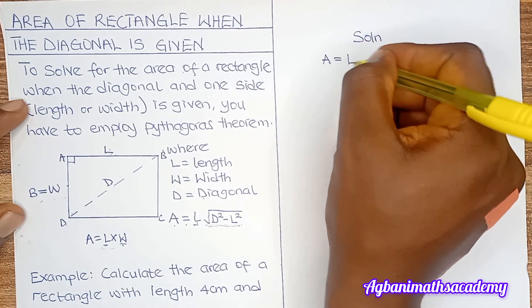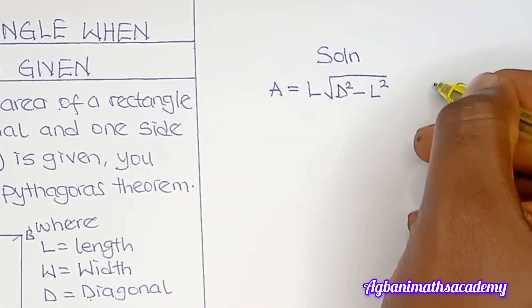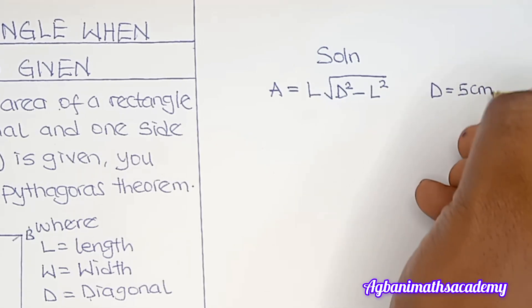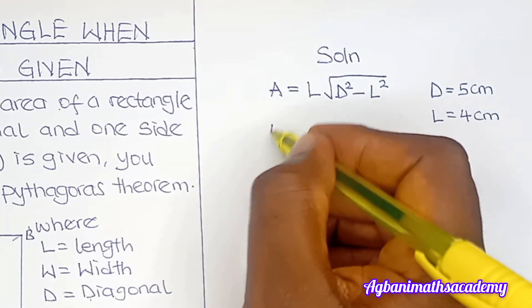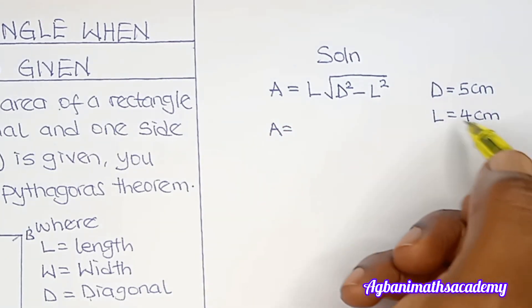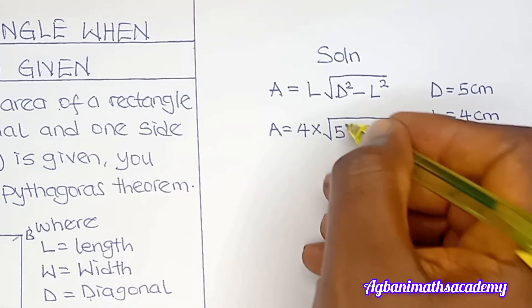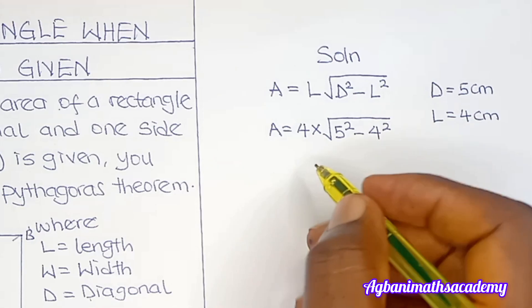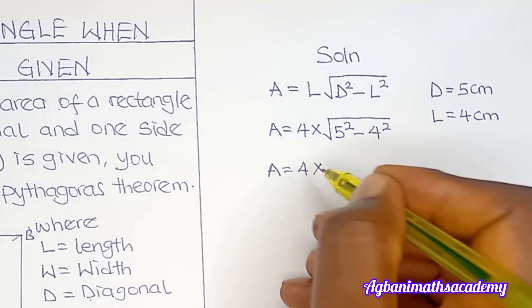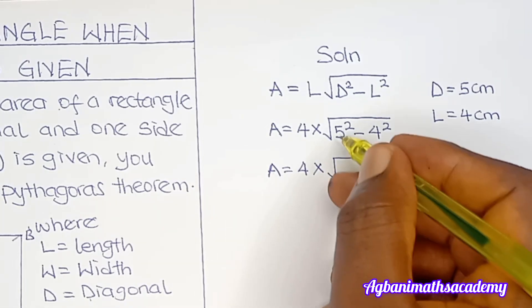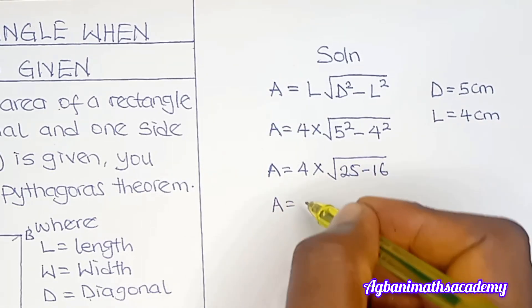Solution: Area = length × √(d² − l²). We know d = 5 cm and l = 4 cm. So: A = 4 × √(5² − 4²). That gives us A = 4 × √(25 − 16).